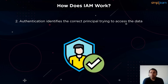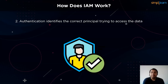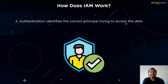Authentication is the process of confirming the identity of the principal trying to access the product. The principal must provide its credentials or required keys for authentication. This step can be further enhanced by multiple authentication factors and geologs, among other things. Once the identity is confirmed, the principal has the ability to view the data behind the wall of security and take the necessary steps.